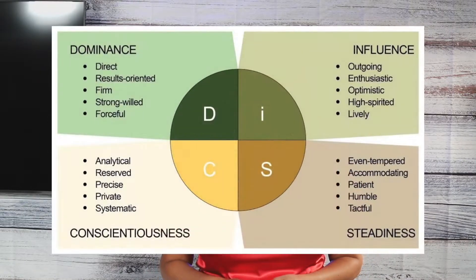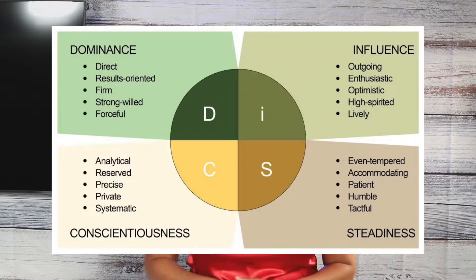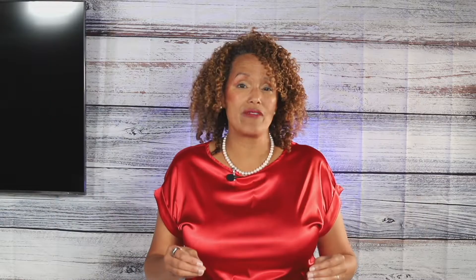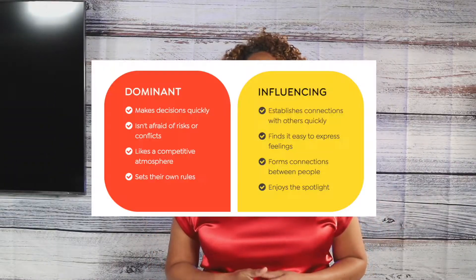Now let's get to the heart of what a DISC profile assessment actually is and how it can help you. The DISC model puts people into four different categories based upon their communication preferences. The first is D for dominance, and this person is results driven, likes to move quickly, and likes to be successful.